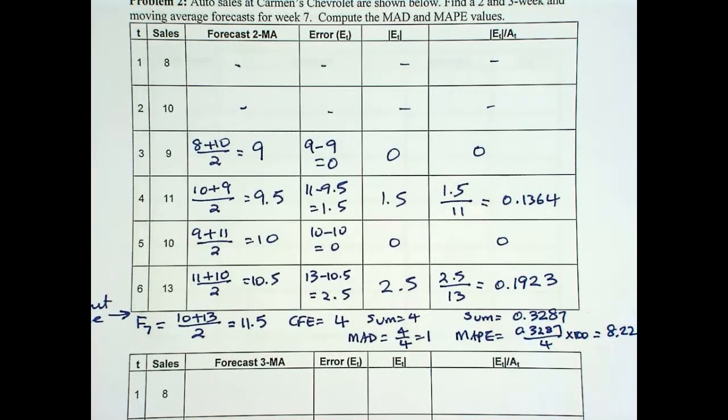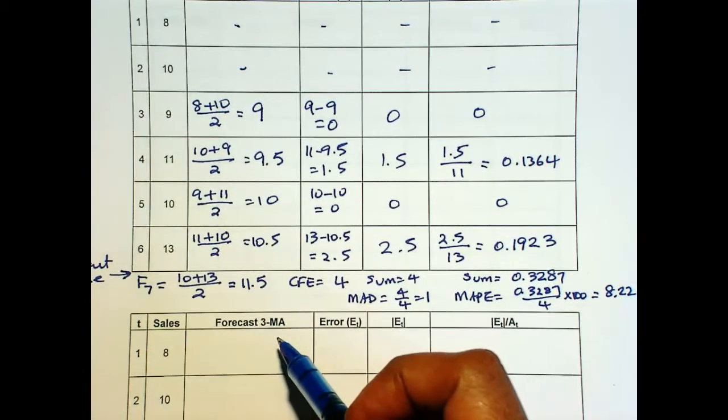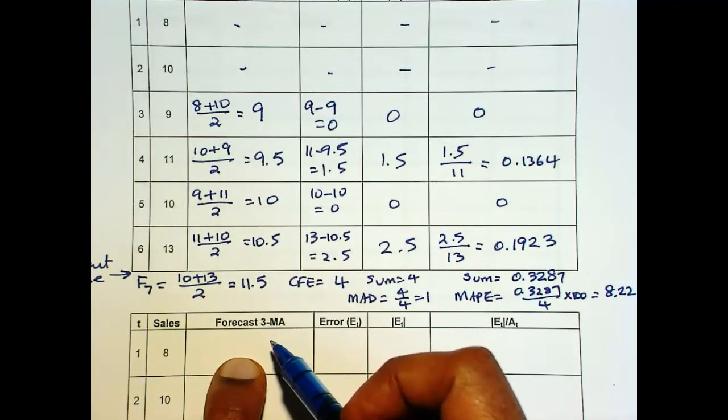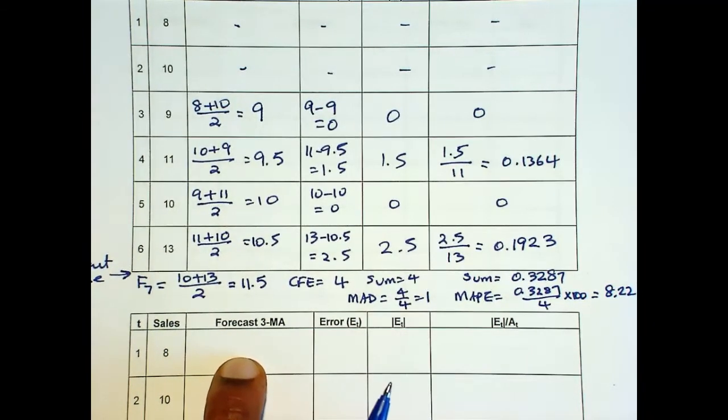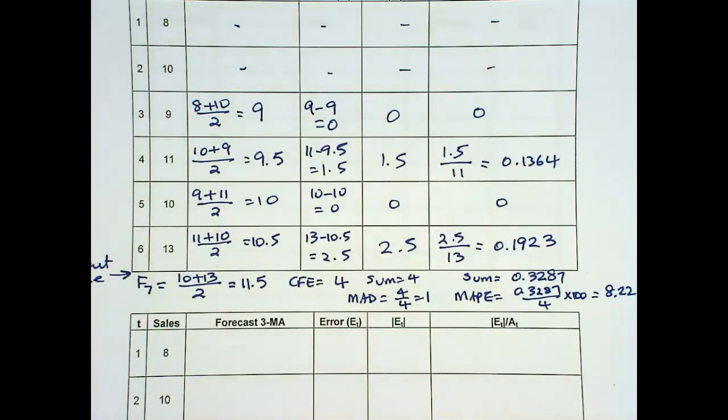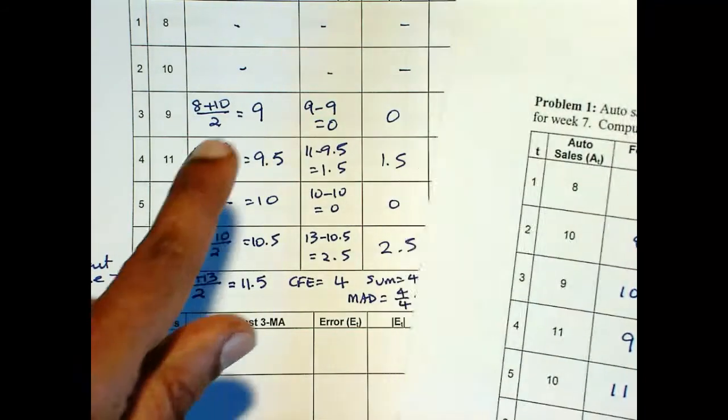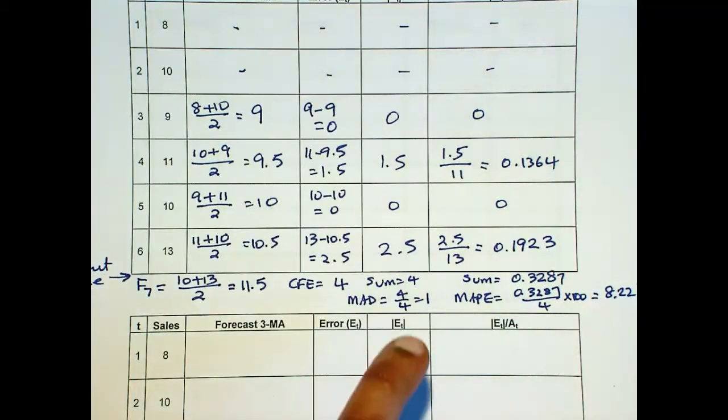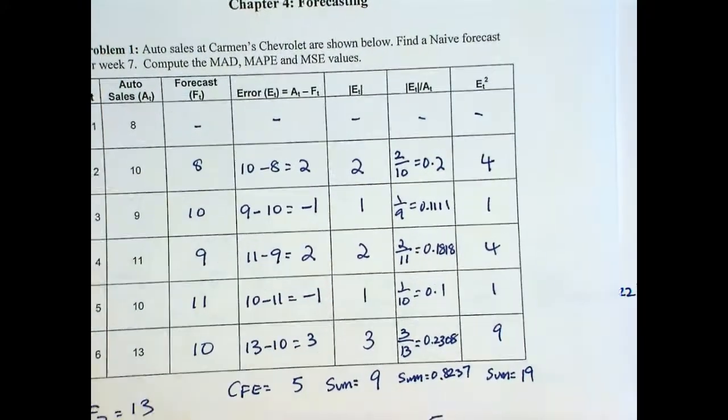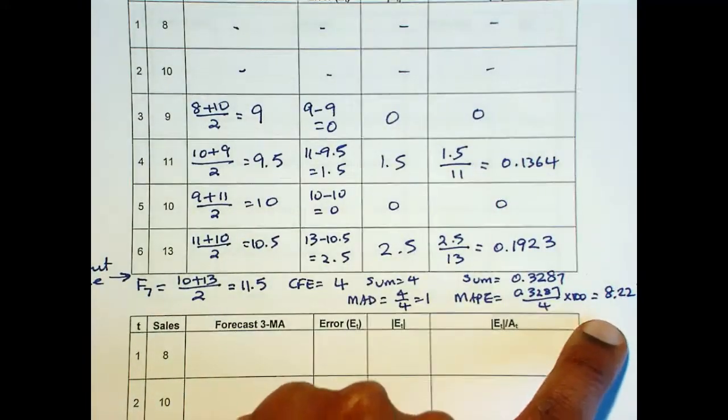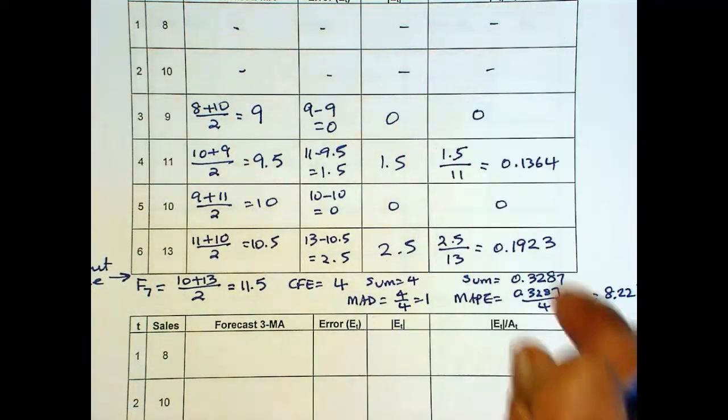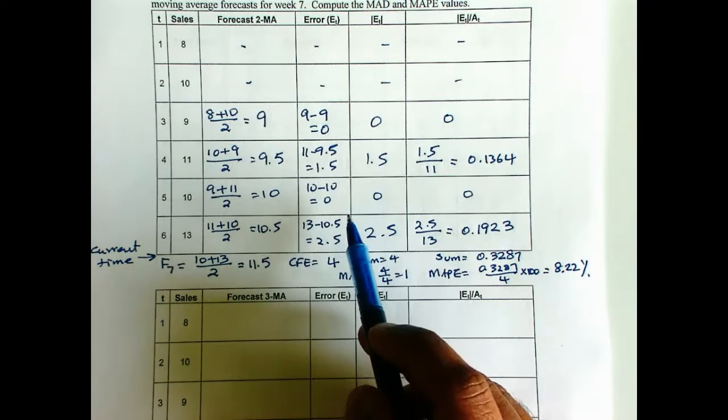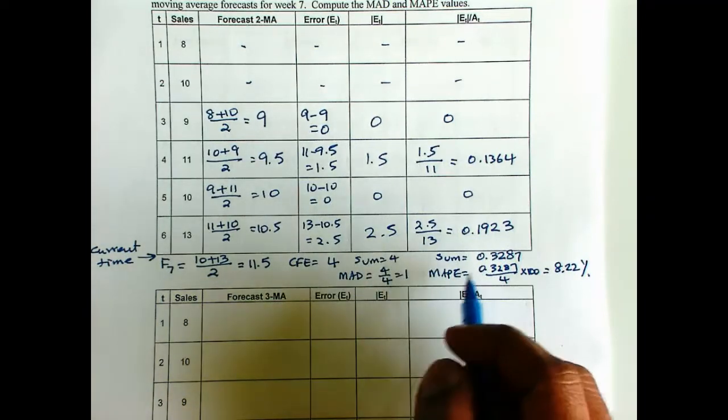Now let's see whether computing 3 period moving average will decrease the error rates. So in that case maybe 3 period moving average is better than the 2 period moving average. Now we know that the same data when we used naive model, the MAD was 1.8 and now it is 1. And MAPE was 16.47% and now it is 8.22%. So this one is certainly better in terms of forecast error. So moving average 2 definitely has a smaller forecast error than the naive model.